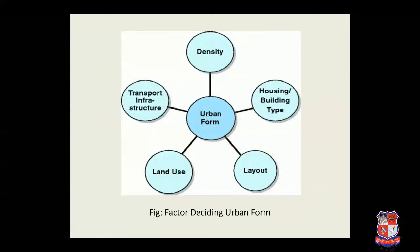Now you can see the figure of factors deciding urban form. Transportation affects the urban form and geographical growth of the urban area. Uncontrolled growth due to increased urbanization without the benefit of planned expansion of housing, transport and other needed infrastructure has led to declining quality of life in many urban areas.